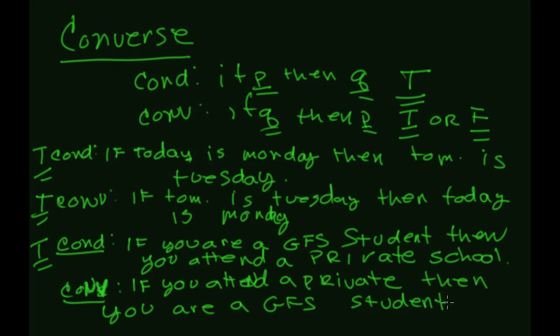That converse is false. All we need is one counterexample. Take a student from McDonogh — they attend a private school, but they are not a GFS student. Same goes for students from Bridmar, Rolling Park Country School, or St. Paul's — they all go to private schools but none of them are GFS students. So here the conditional is true but the converse is false, meaning there is no connection between the truth value of the conditional and the truth value of the converse.